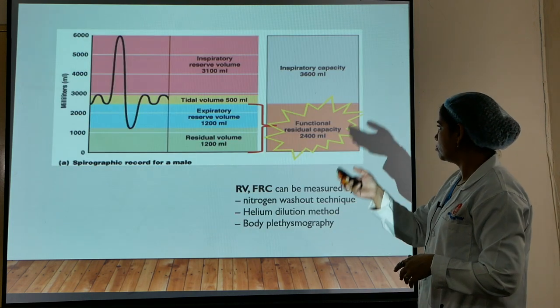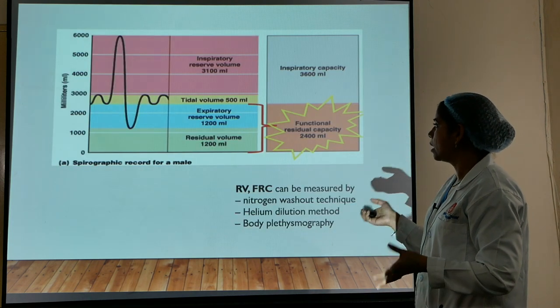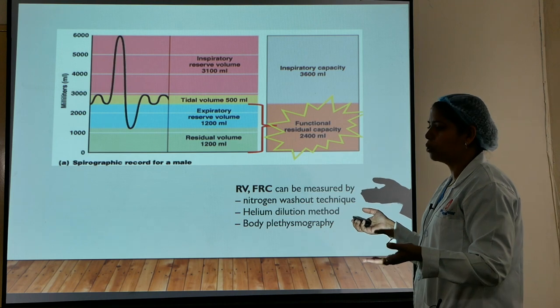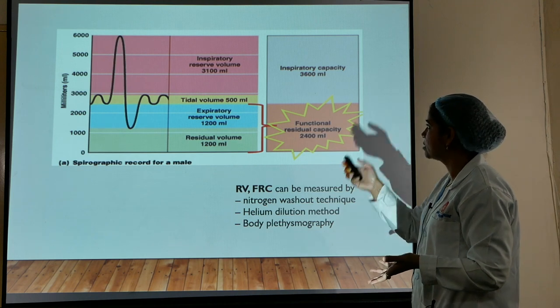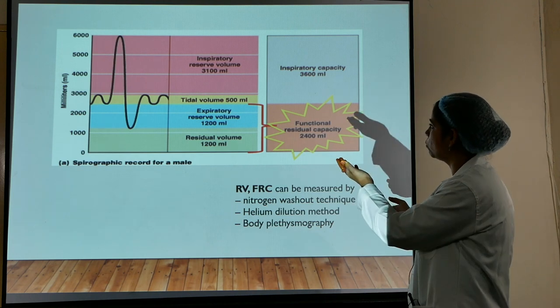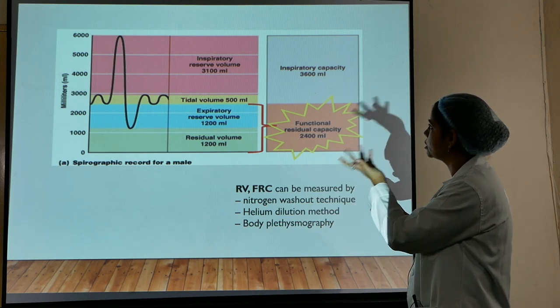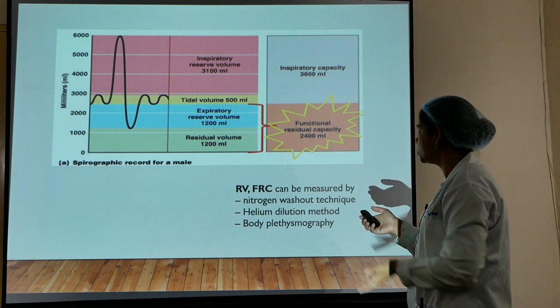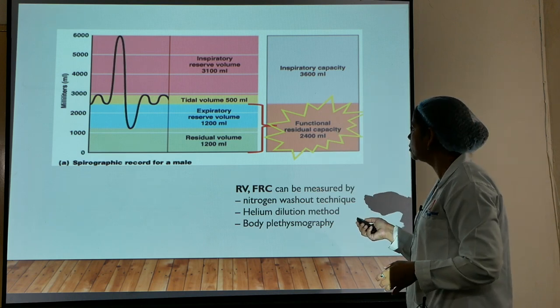The basic spirometric graph includes tidal volume, expiratory and inspiratory reserve volumes, and residual volume.